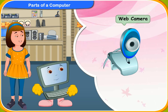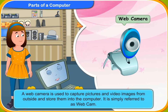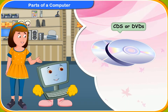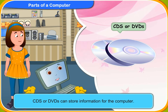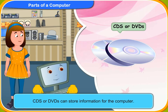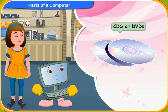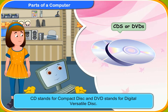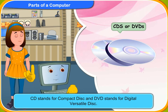And what about this? That is a web camera. It is used to capture pictures and video images from outside and store them into the computer. It is simply referred to as webcam. What are these round discs? They are called CDs or DVDs. They can store information for the computer. CD stands for compact disc and DVD stands for digital versatile disc.